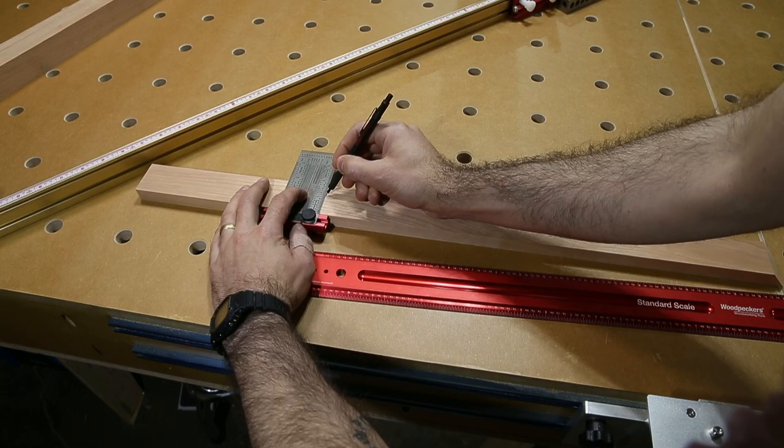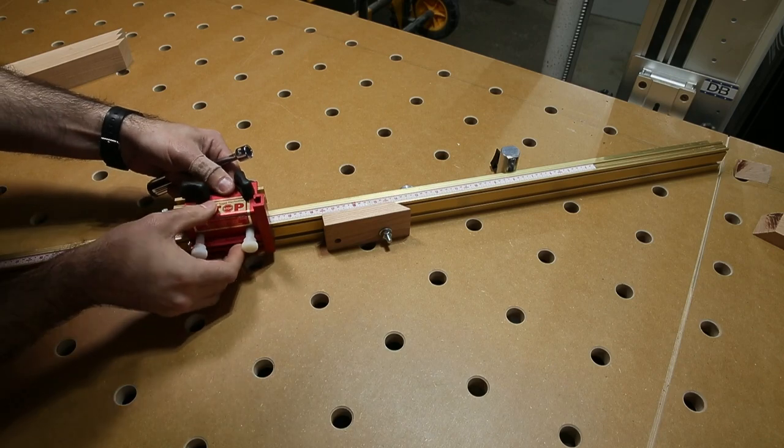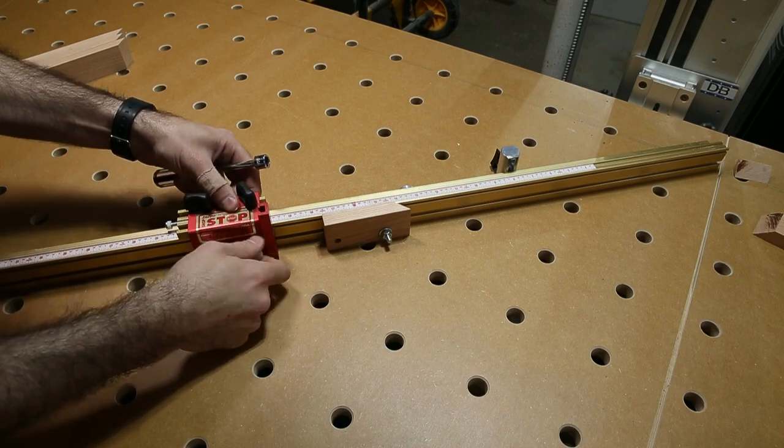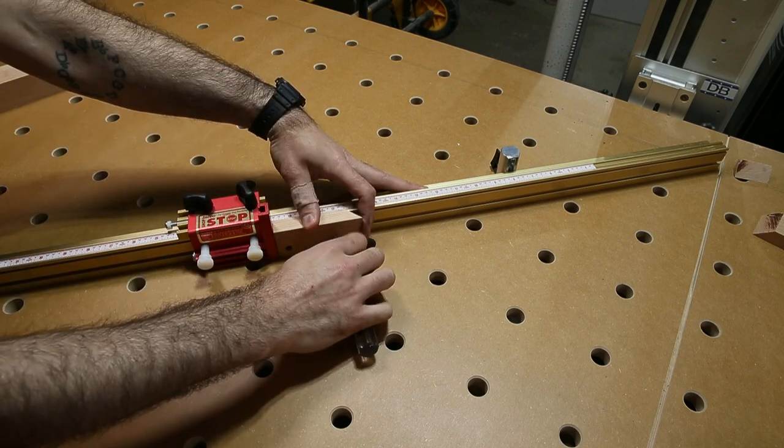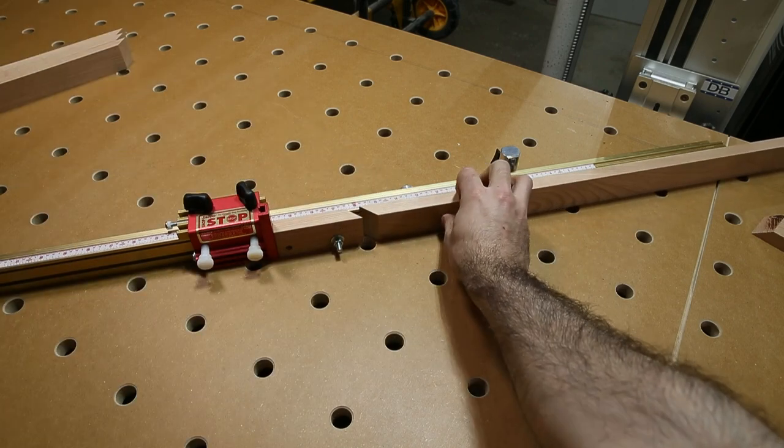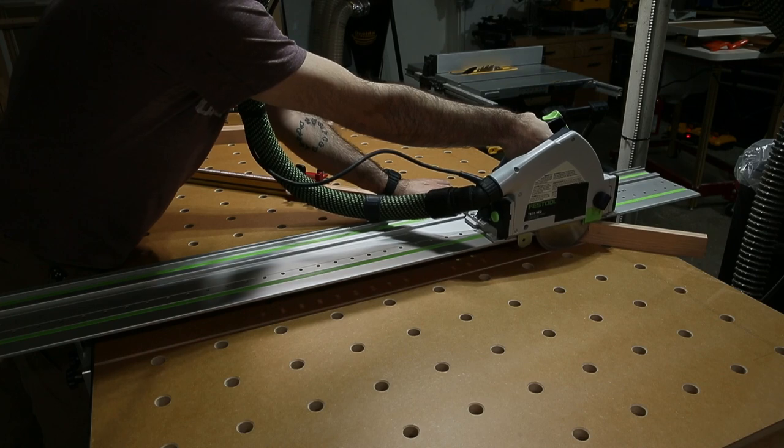So I'll mark a sort of no-go line which is my finished length and I'm going to put my stop a little bit long. So I think here I'm going to be trying to cut it to 21 inches when my final dimension is actually 20.